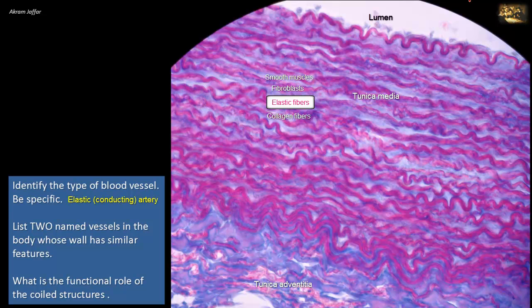Returning to the second part of the question, list two named vessels in the body whose wall has similar features. In fact, elastic arteries are the largest blood vessels. Examples are the pulmonary trunk, the aorta, with its major branches such as the brachiocephalic trunk, common carotid arteries, and the subclavian arteries.